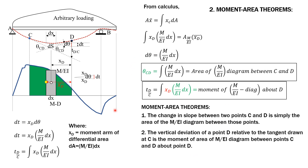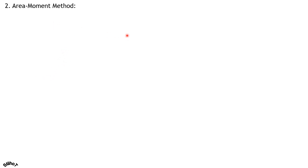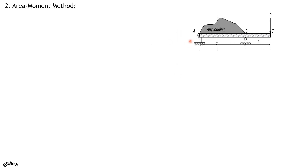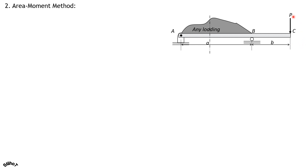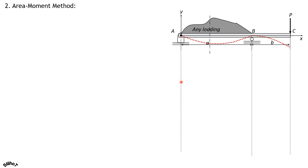We formalize the two area moment theorems. The first theorem is that the change in slope between any two points on the elastic curve is simply the area of the M over EI diagram between those two points, and is positive when the tangent rotates counterclockwise from left to right. The second theorem is that the vertical deviation of a point D relative to the tangent drawn at C is the moment of the area between C and D about point D. Now let's apply the area moment method to a beam with an arbitrary loading and a point load at the right end, with simply supported points A and B.